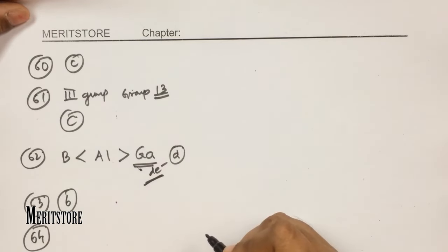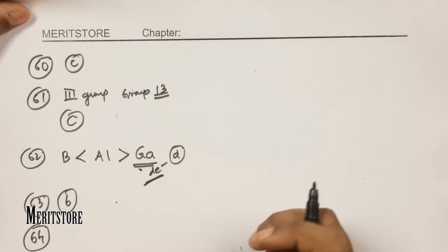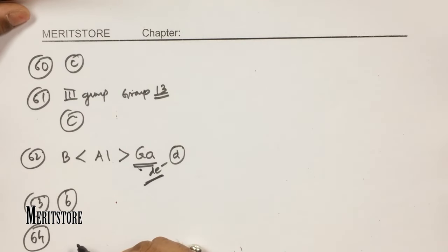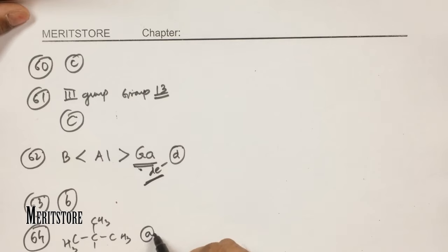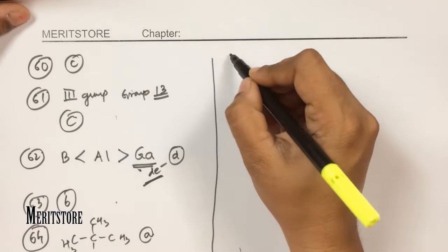Question number 64: on mixing an alkane with chlorine and irradiating with UV light, it forms only one monochloroalkane. This occurs with neopentane (option A), where all four methyl groups are equivalent. Chlorination of any methyl group gives the same product. Therefore only one type of monochloroalkane is obtained, making option A correct.